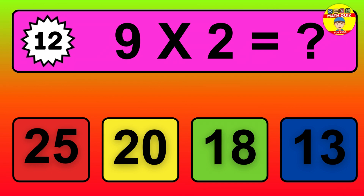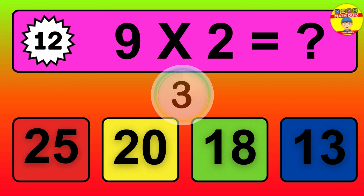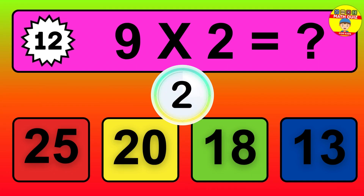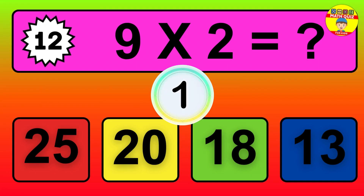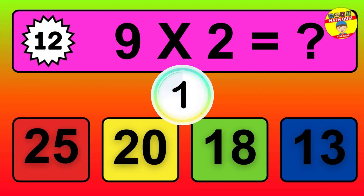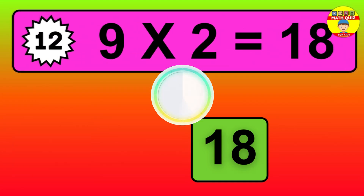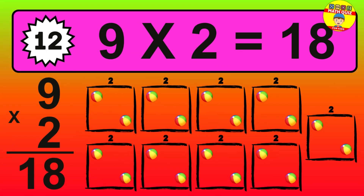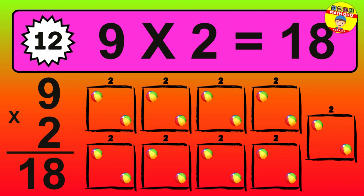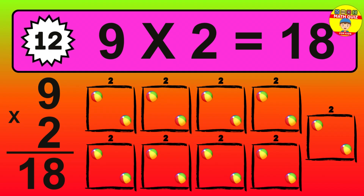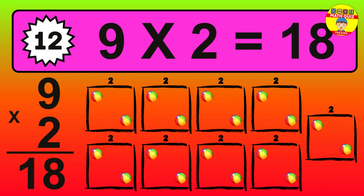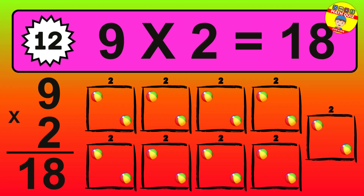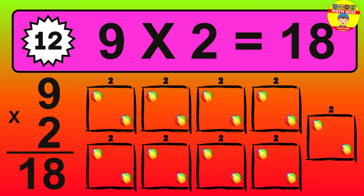Question 12. 9 times 2 equals what? The answer is 9 times 2 is 18. To calculate, we have 9 groups with 2 balls each one. So, how many balls do we have? 18 balls.